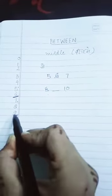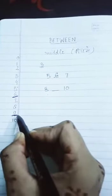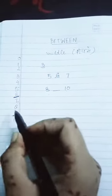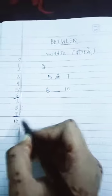Eight aur nine ke beech mein, hum ne dekha ki jo number hai, woh hai nine. Yarni ki eight ke baad nine aa raha hai, phir ten hai. Yarni ki eight aur ten ke beech mein number hai, woh hai nine. So we will write that this number nine is between eight and ten.